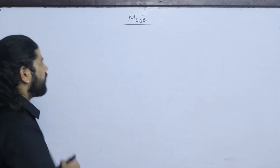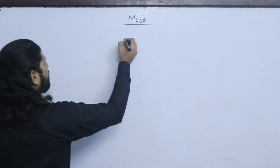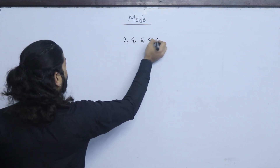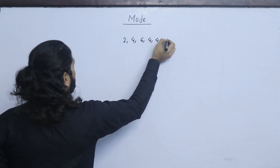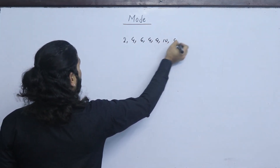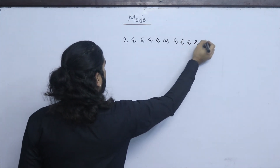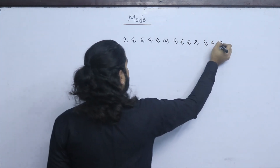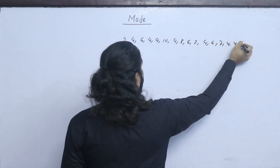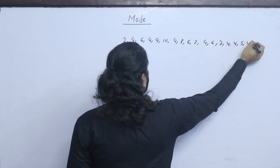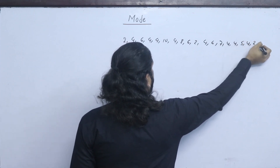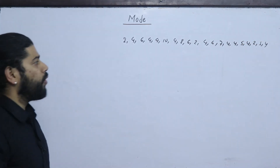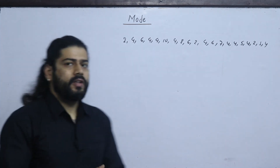For the individual series, consider the data: 2, 4, 6, 4, 4, 10, 4, 8, 6, 2, 4, 6, 7, 4, 4, 5, 4, 2, 1. The value 4 appears most frequently, so this is the mode.